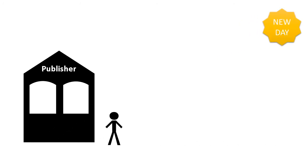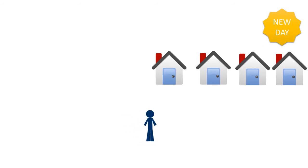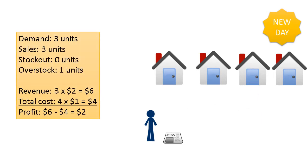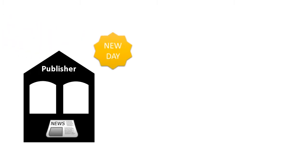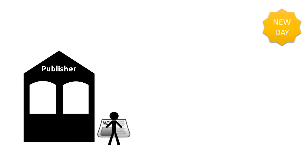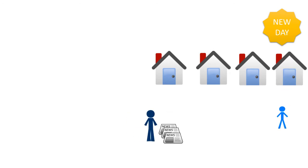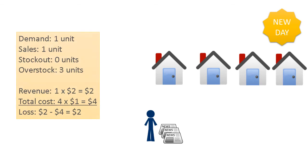The next day, the Newsvendor again buys 4 papers from the supplier. But today is not like yesterday — only 3 units were sold, so we have 1 unit of overstock. Our profit would be lower. The day after, again an order of 4 papers, but this time only 1 unit was sold, so our cost even exceeds our revenues — meaning we have a loss.